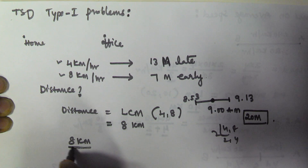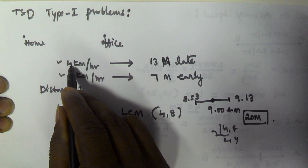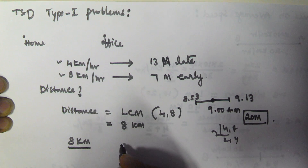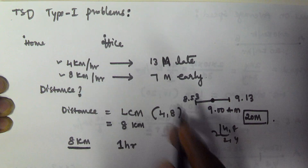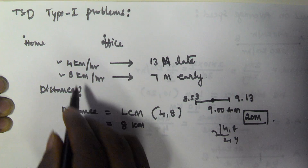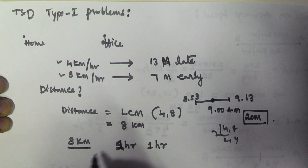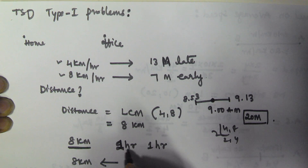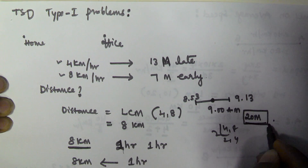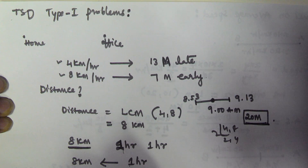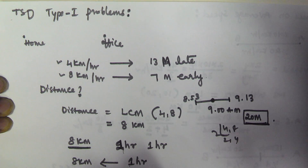If 8 kilometers is the distance, this person on the first day is traveling with 4 kilometers per hour, so he will take 2 hours to reach the office. On the second day, he is traveling with 8 kilometers per hour, so he will take 1 hour. The difference between 2 hours and 1 hour is 1 hour. But actually, the time difference is 20 minutes. If 1 hour corresponds to 8 kilometers, then 20 minutes corresponds to 8 by 3 kilometers. So 8/3 kilometers is the distance between his home and office.